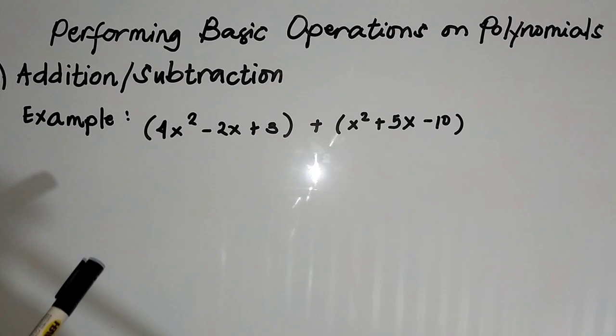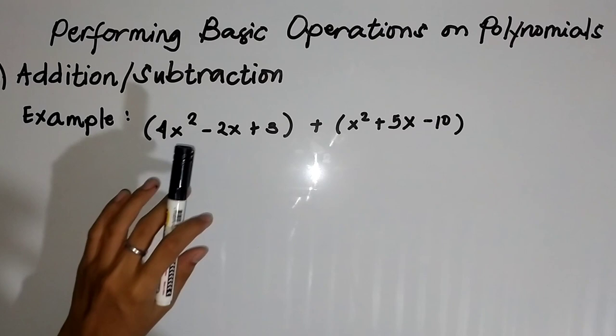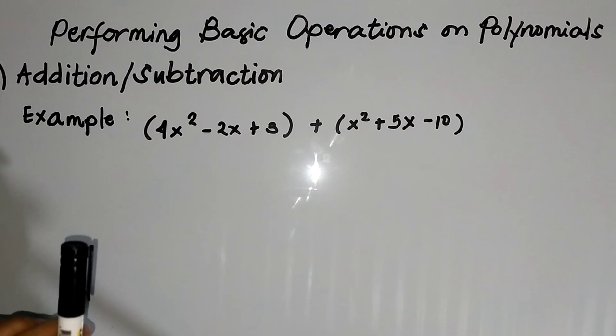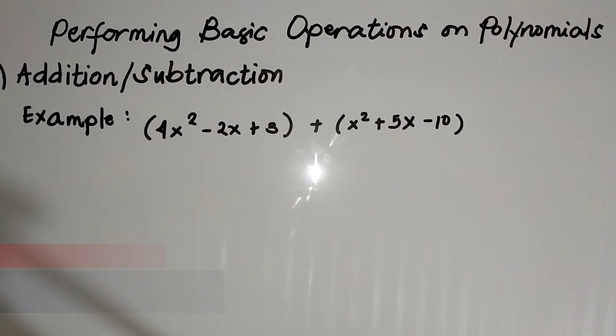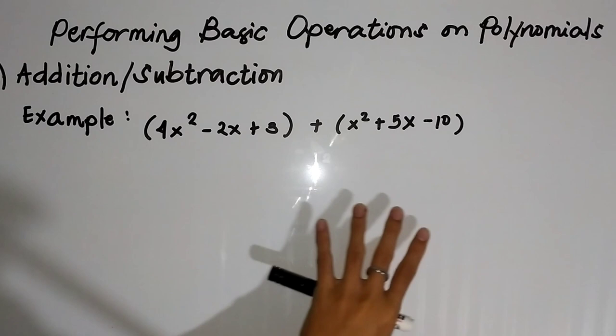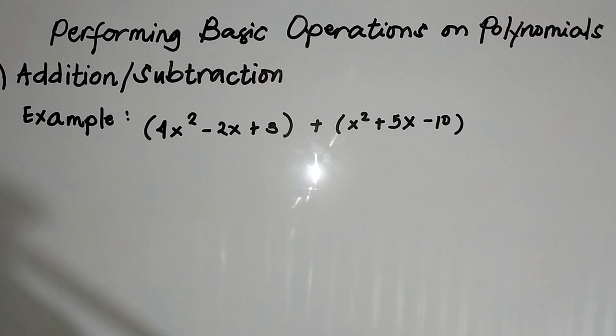Since siya yung nauuna, ibig sabihin yung polynomial natin ay naka-standard form na. For instance, kung may 4x cubed pa, kailangan yung 4x cubed siya yung nauuna sa arrangement kasi siya yung may pinaka-highest degree of exponent. Pangalawa, pwede mong gamitin yung distributive property. By the way, yung ituturo kong way to solve this kind of problem ay yung horizontal way, kasi mas madali to kaysa doon sa vertical.